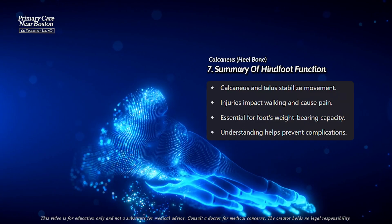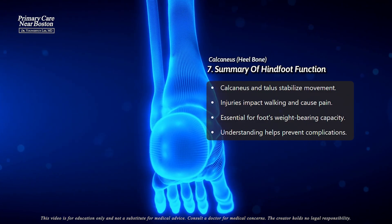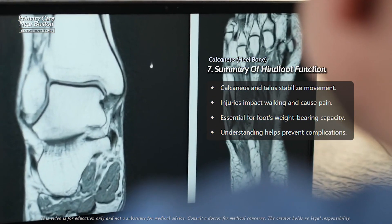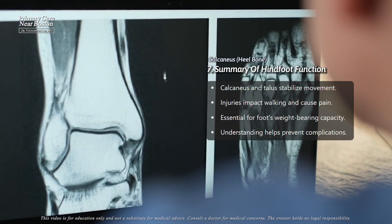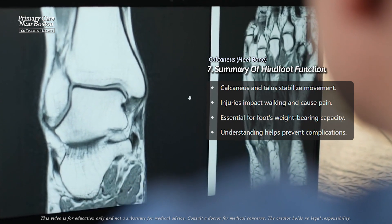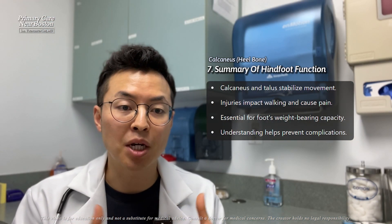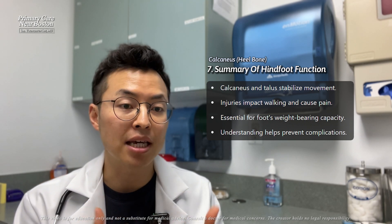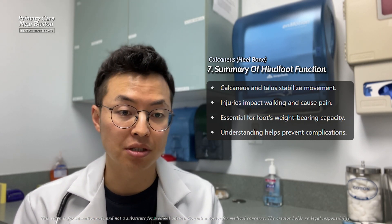In summary, the calcaneus and talus are essential for foot movement and stability. Problems with these bones, like ligament injuries or arthritis, can cause pain and affect how you walk. Understanding their role can help explain why foot issues might develop and how they can be treated to prevent further complications.